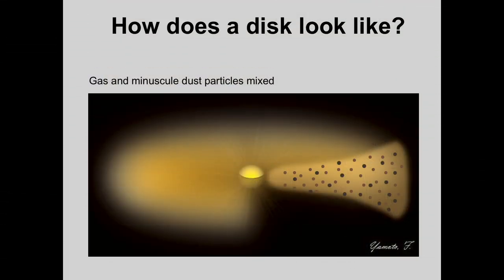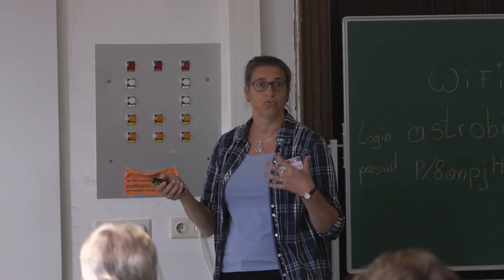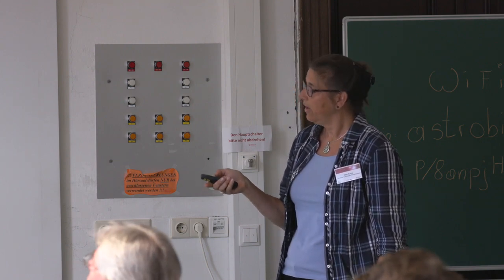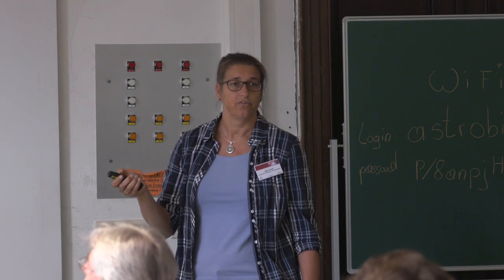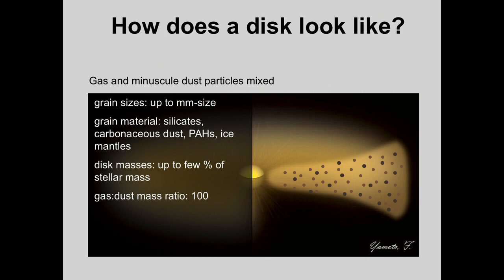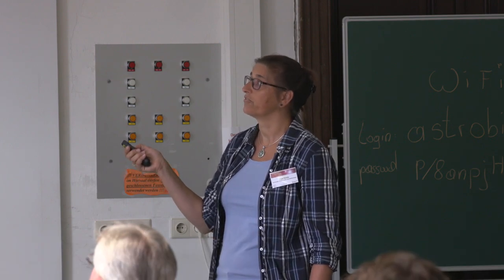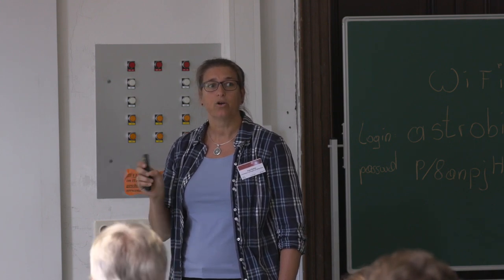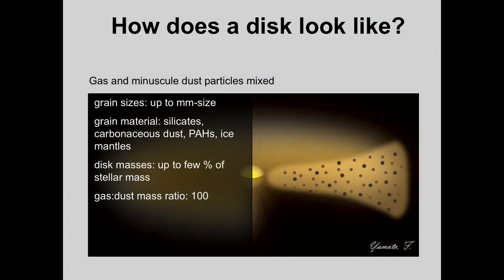These disks are structures that surround the central star. We know they are rotating, they contain a lot of gas and small dust grains — really tiny, smaller than even a micrometer, smaller than a hair. Grain sizes can be up to millimeter in size, which is the largest size we can receive radiation from. If there were kilometer-sized planetesimals in these disks, we would not receive detectable radiation from them. So when I talk about the solid component or dust, I mean stuff in up to millimeter-sized grains.